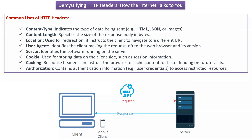Here we will see common HTTP headers and their usage. The first one is content-type, which indicates the type of data being sent — the data can be HTML, JSON, or images. The second one is content-length, which specifies the size of the response body in bytes.